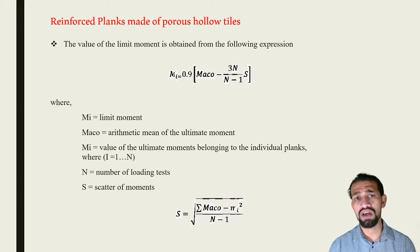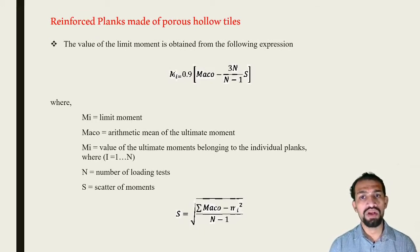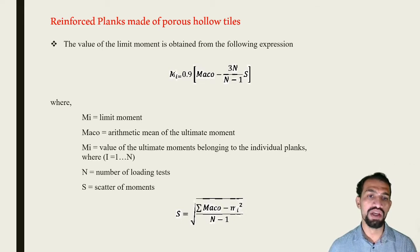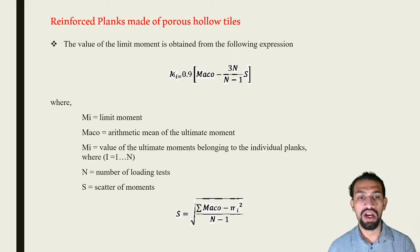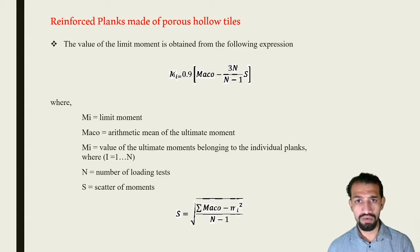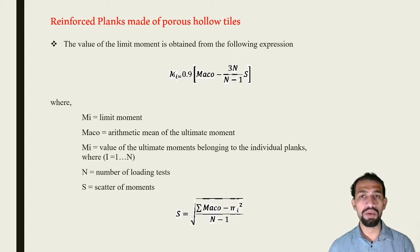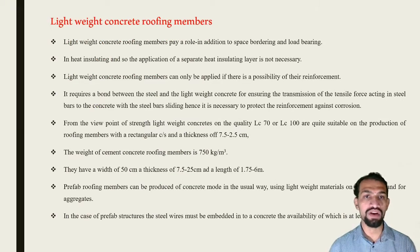For reinforced planks made of hollow tiles, the limiting moment expression is used: Mi is the limiting moment and Mako is the arithmetic mean of ultimate moments. The Mi value refers to the ultimate moments belonging to individual planks based on the number of load tests and scatter of moments.